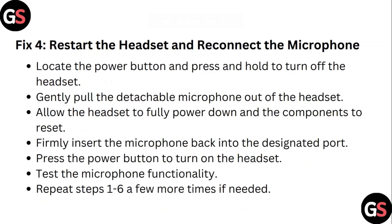Step 4: Restart the headset and reconnect the microphone. Locate the power button and press and hold to turn off the headset. Gently pull the detachable microphone out of the headset. Allow the headset to fully power down and components to reset, then firmly insert the microphone back into the designated port. Press the power button to turn the headset back on and test the microphone functionality. Repeat these steps a few more times if needed.